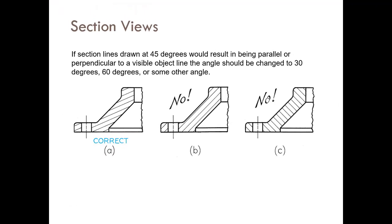If part of the object already has an edge at 45 degrees, you have to adjust the section line angle to 30 or 60 degrees. You do not have to keep it at 45 degrees in that case.